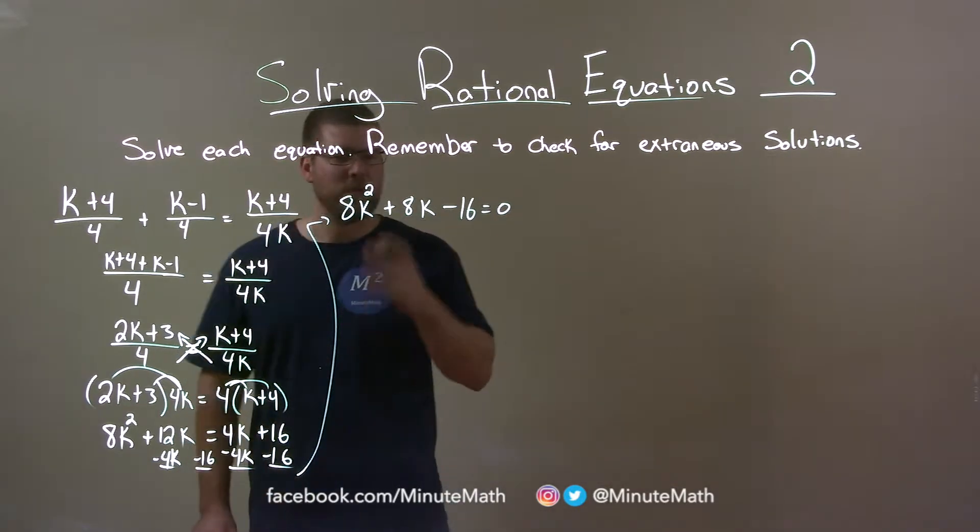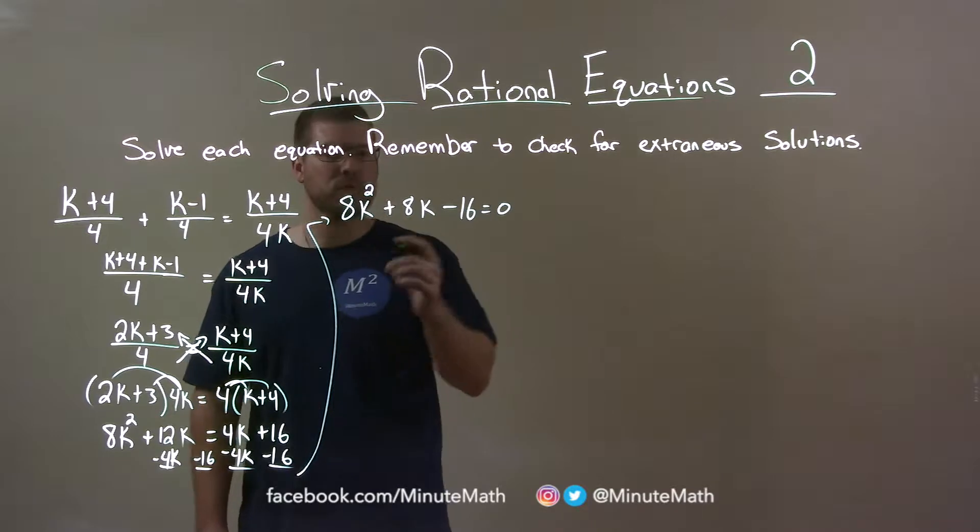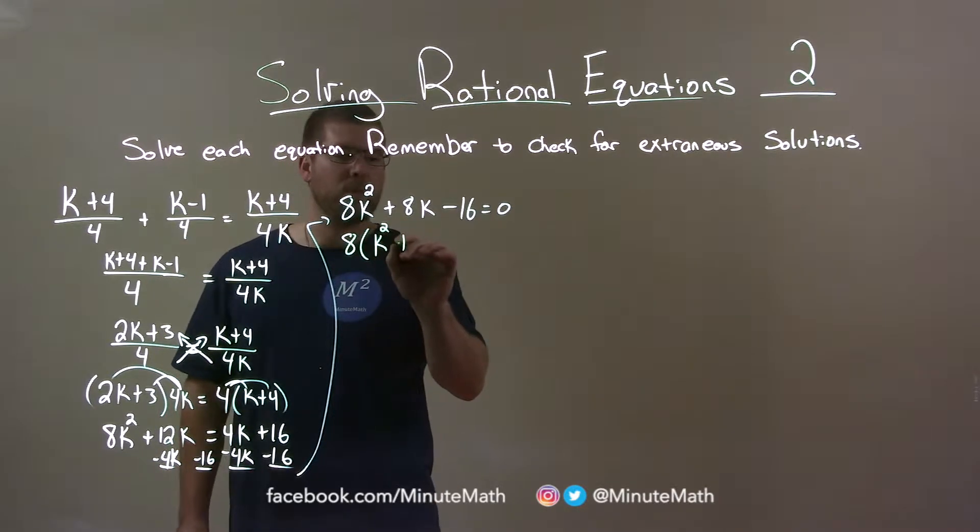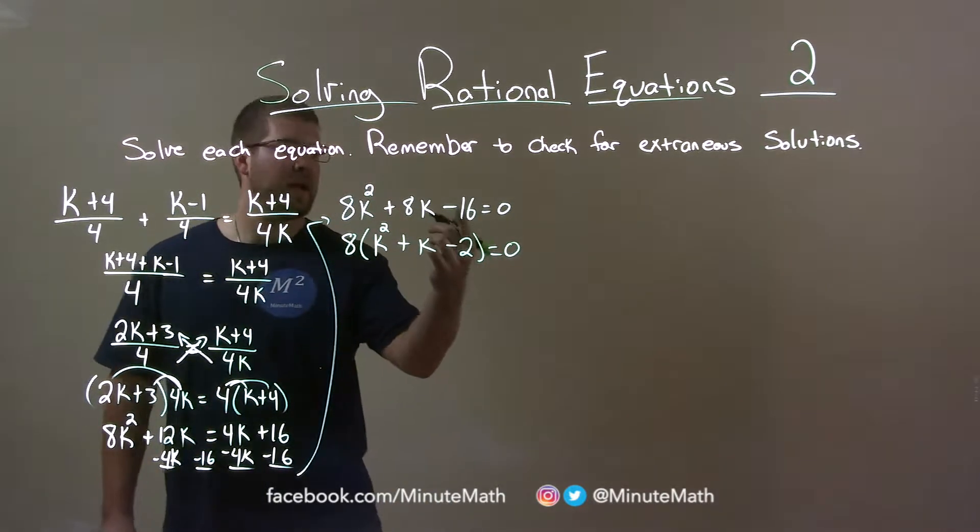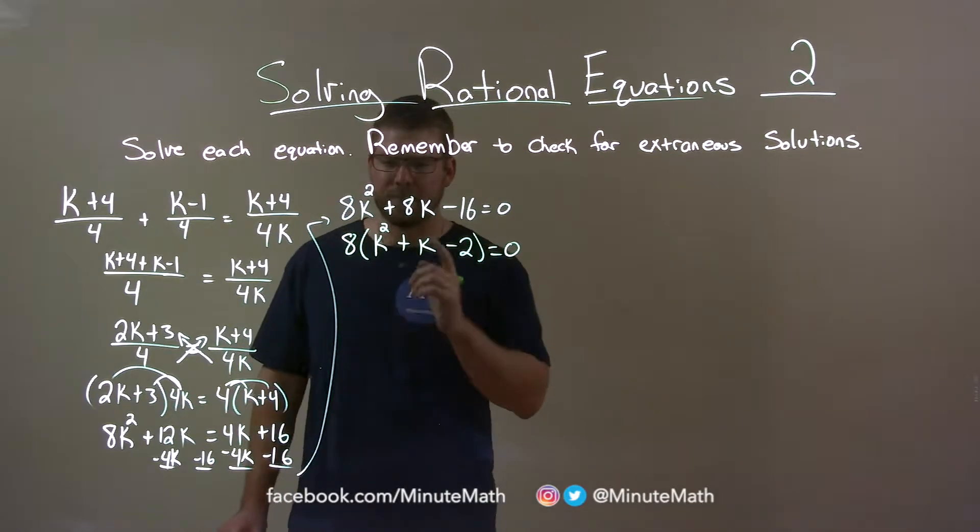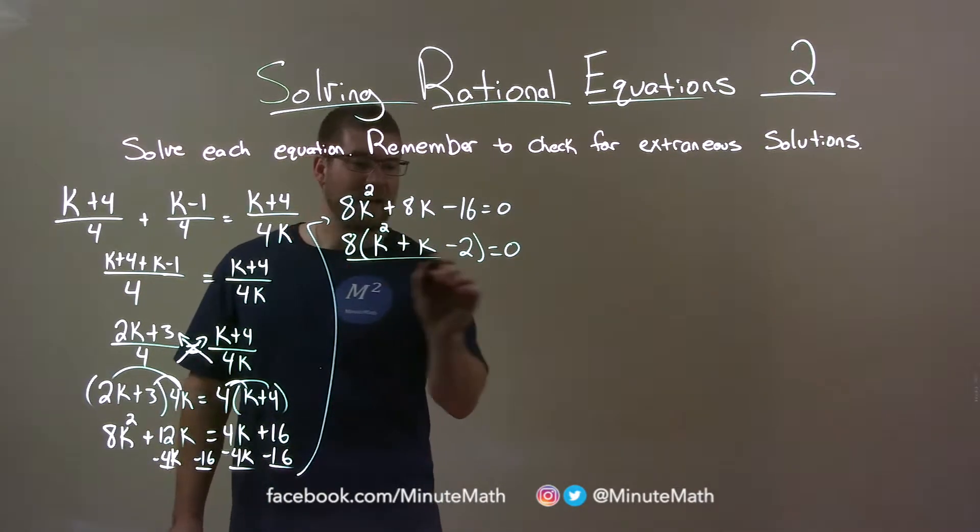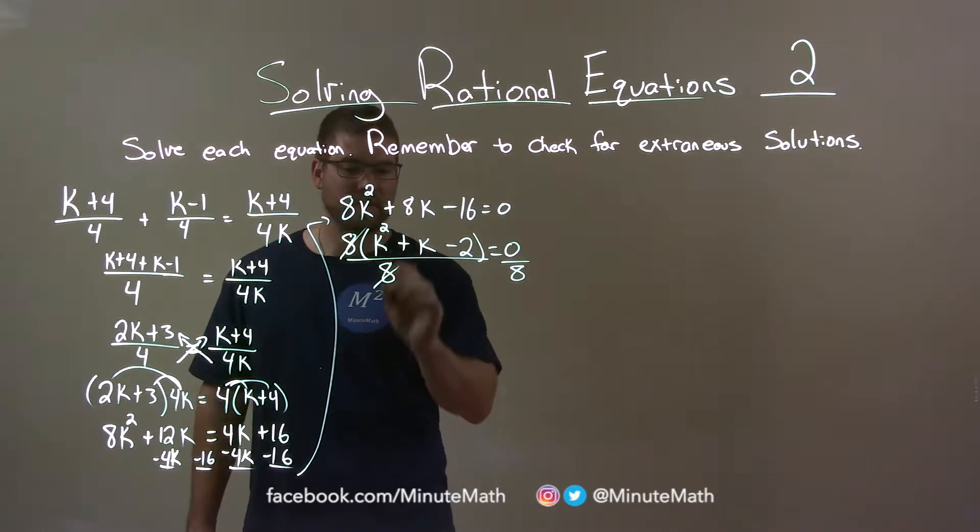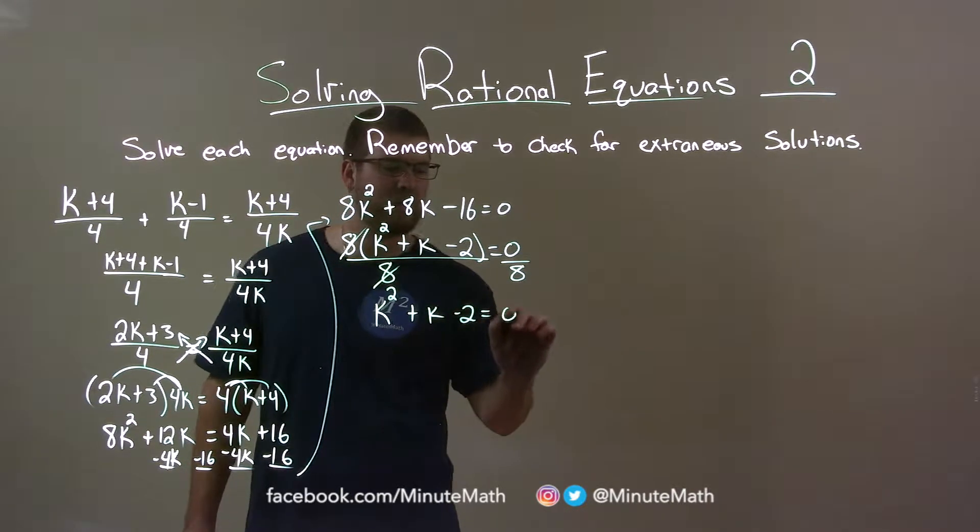And before we start factoring, let's see if we can simplify. I see that 8 goes into all parts here, so let's pull out an 8. 8 times k squared plus k minus 2. That equals 0. I pulled an 8 out of all three parts there. And that makes it easier to factor because right now I could divide both sides by 8. Those 8's cancel and now I'm left with something much easier to factor. k squared plus k minus 2 equals 0.